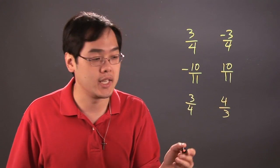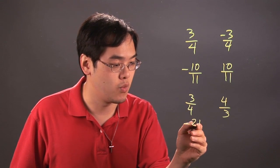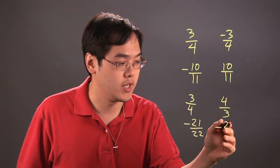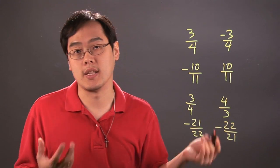Or if the number was negative, let's say you have negative 21 over 22, then the reciprocal of that would be, you flip it, negative 22 over 21, maintaining the signs.